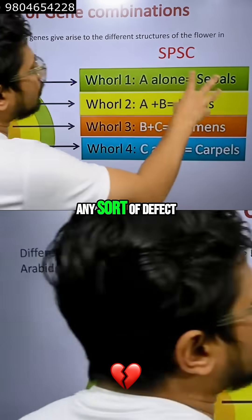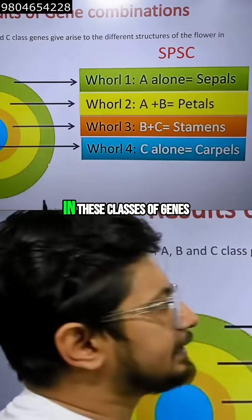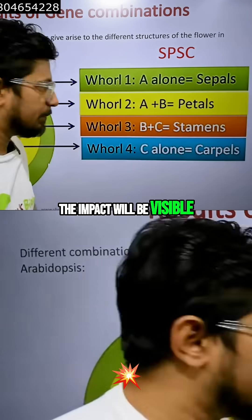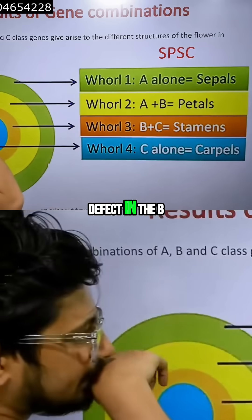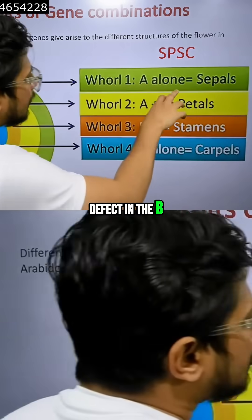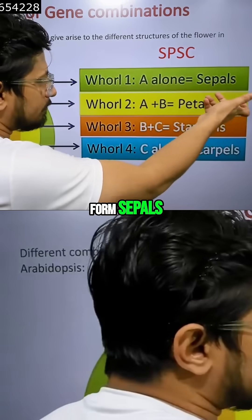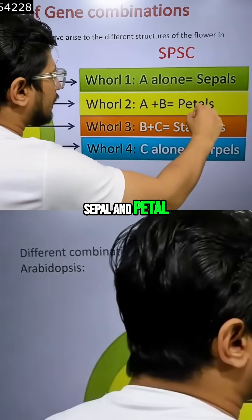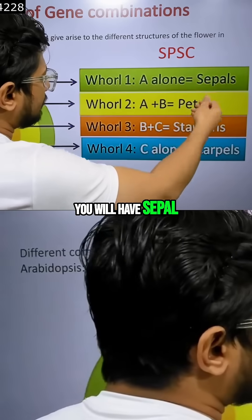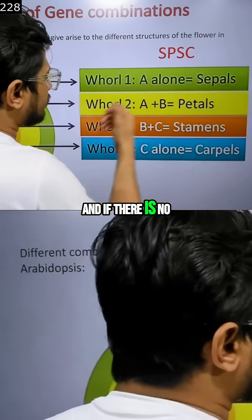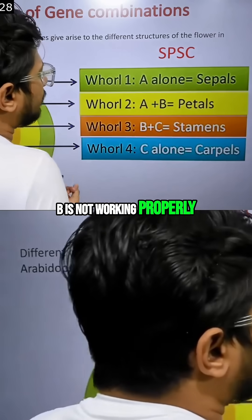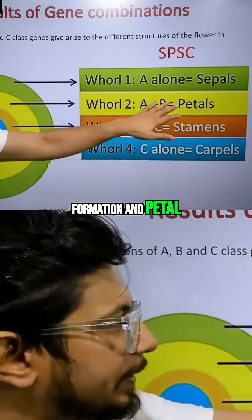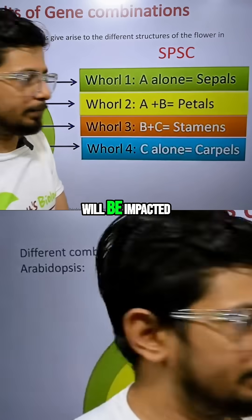If there is any sort of defect in these classes of genes, the impact will be visible. For example, if there is any defect in gene B, then A alone will form sepal. So instead of sepal and petal, if B is not working properly, stamen formation and petal formation will both be impacted.